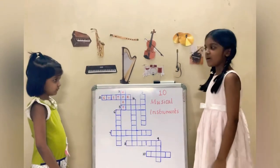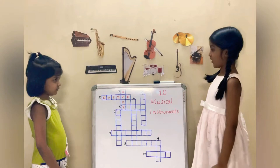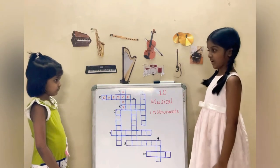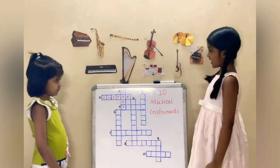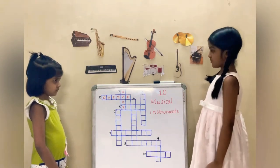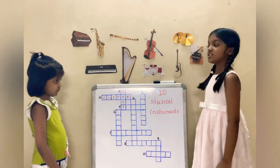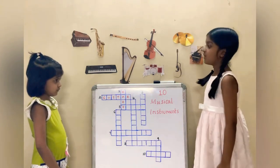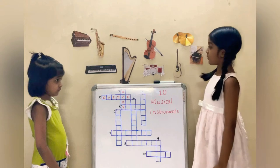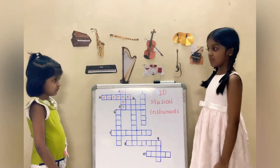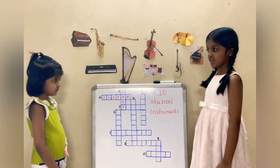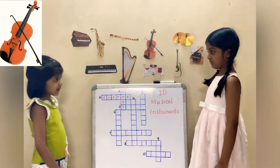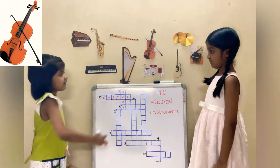Now I am going to tell you the clue for the third string musical instrument. The nickname of the instrument is fiddle. The shape of the instrument is a hollow wooden body. Can you guess the name of the instrument? Yes, the name of the instrument is violin.